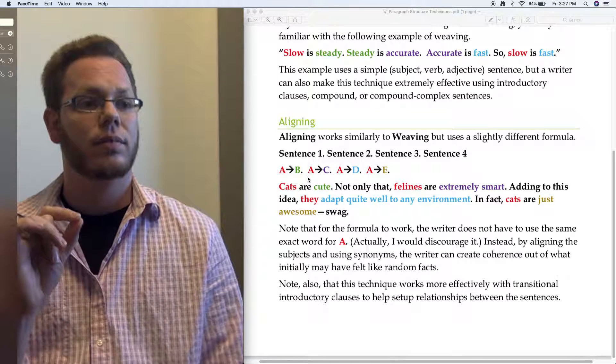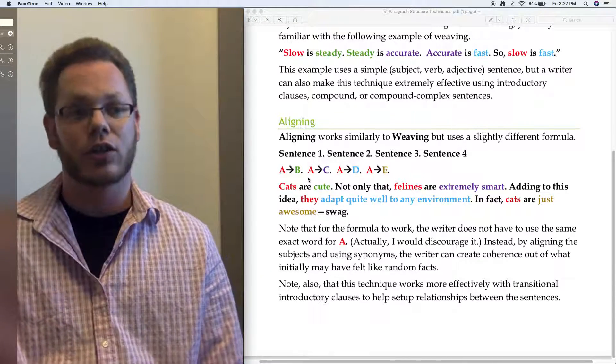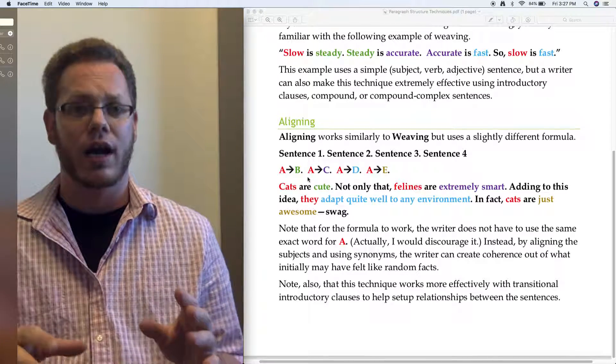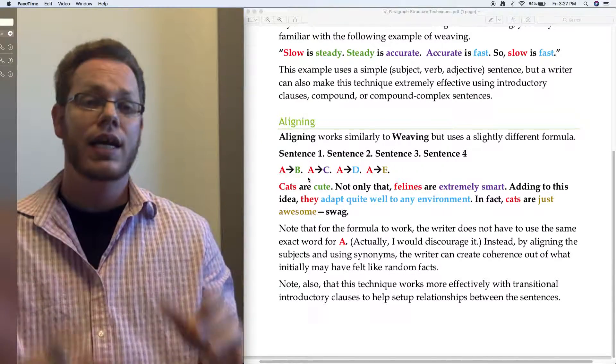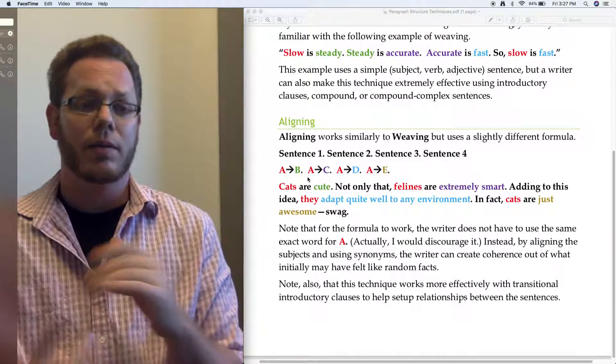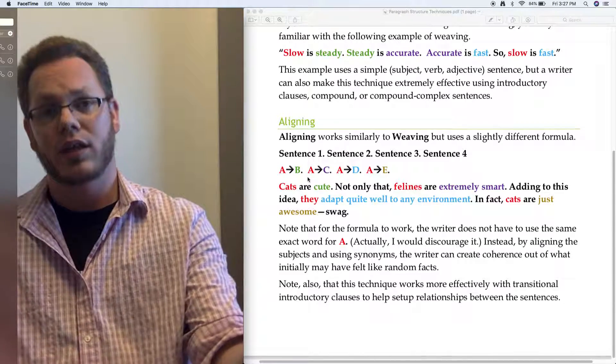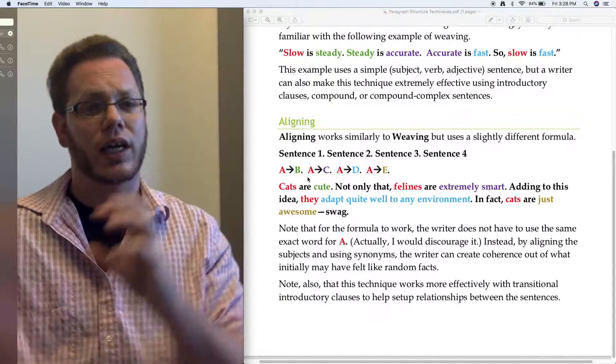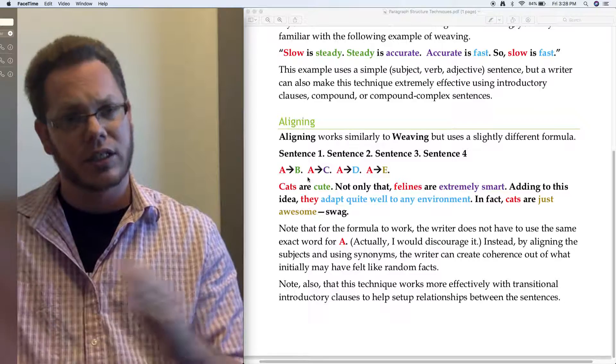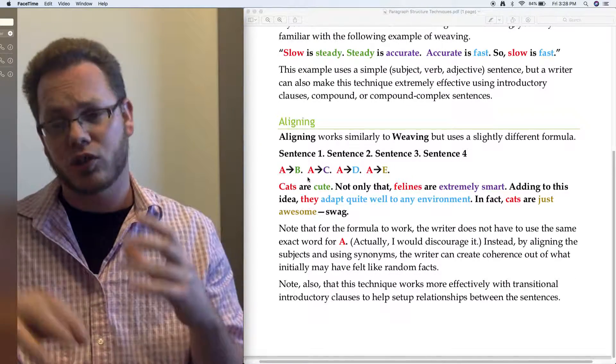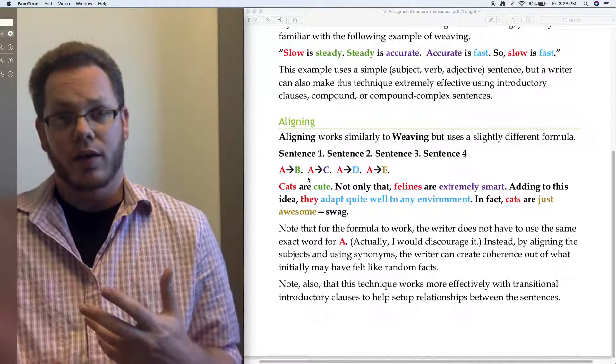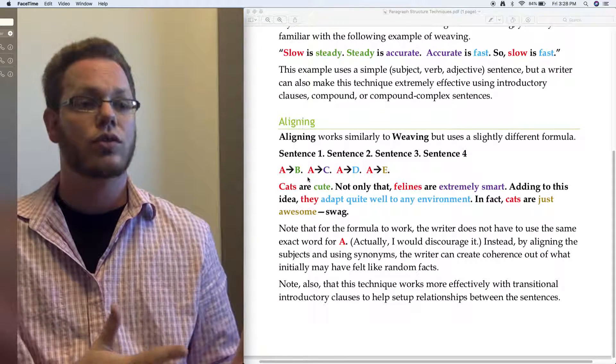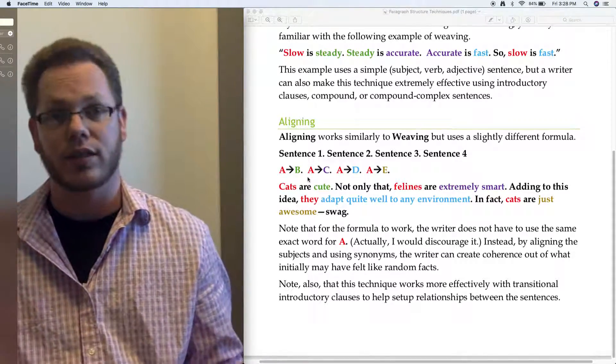If you set up this parallel structure and you don't use transitional phrases, it can feel like a bullet point list, especially if you're using simple sentences. So keep that in mind as you go to apply this. But by aligning these subjects and using synonyms, the writer can create coherence out of what initially may have felt like random facts. Sometimes your initial rough draft, you've got like four different thoughts in your head and you put it in really fast. Sometimes you can flip a sentence around so that the main focus becomes the topic of that paragraph. With structure, it's not changing the content, it's changing the order or organization of the facts. Also note that this technique works more effectively with transitional introductory clauses to help set up relationships among the sentences so that it doesn't feel like a bullet point.